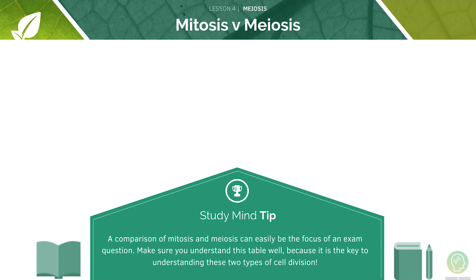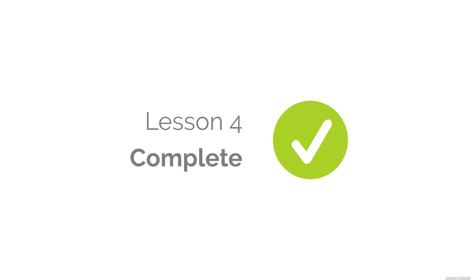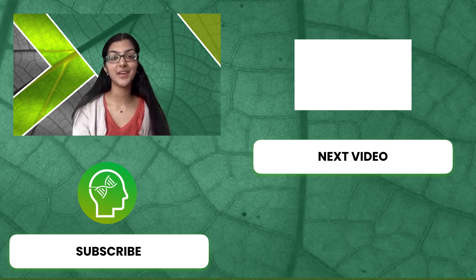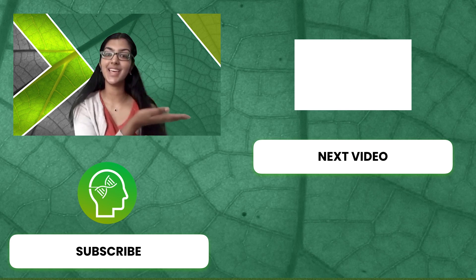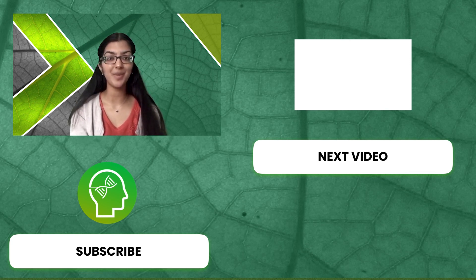A comparison of mitosis and meiosis can easily be the focus of an exam question, so make sure you understand this information well, as it's key for you to understand these two types of cell division. We've now covered all the learning objectives for today's lesson. Feel free to skip back through the video and re-watch anything you are unsure about. We've completed lesson 4. If you enjoyed this tutorial, make sure to subscribe by clicking below and leaving a comment of a topic you'd like to see a video on. Click here to watch the rest of our A-Level Biology series, or visit our website, studymind.co.uk, for past paper compilations by topic and specification.